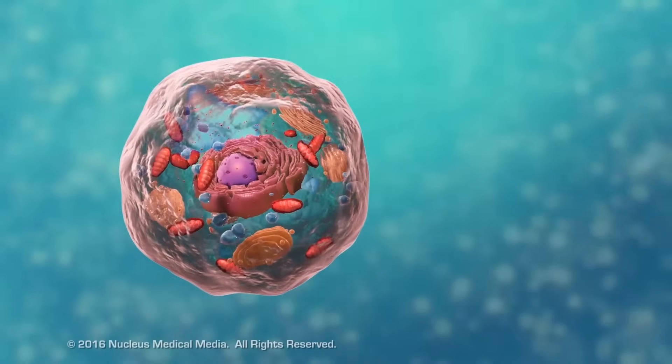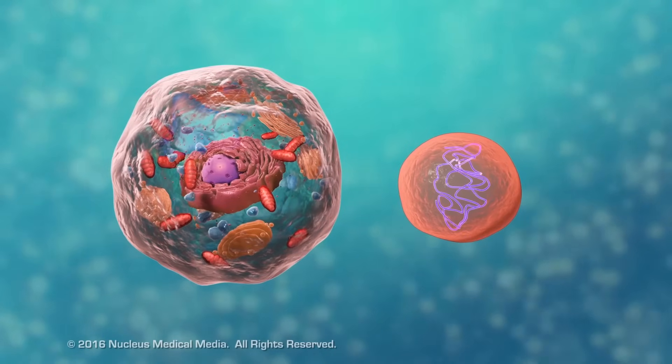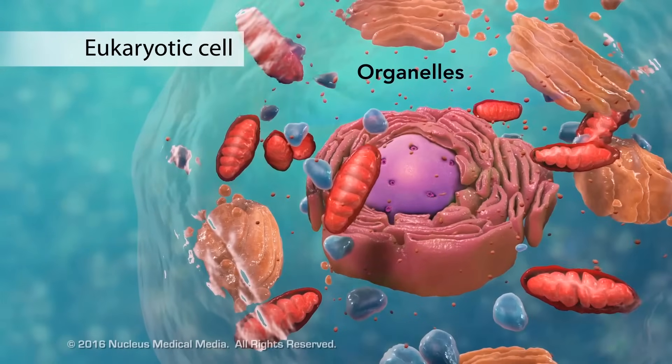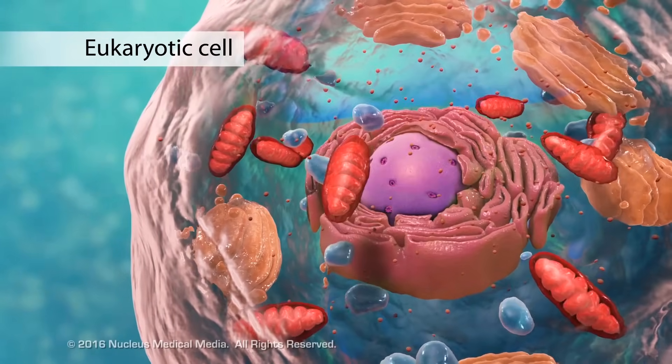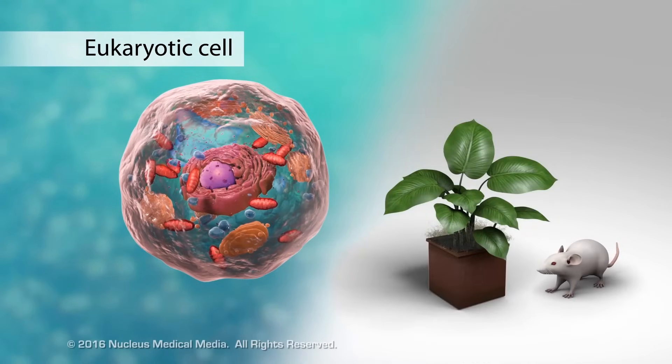There are two broad categories of cells. The first category is eukaryotic cells. They have organelles which include the nucleus and other special parts. Eukaryotic cells are more advanced, complex cells such as those found in plants and animals.